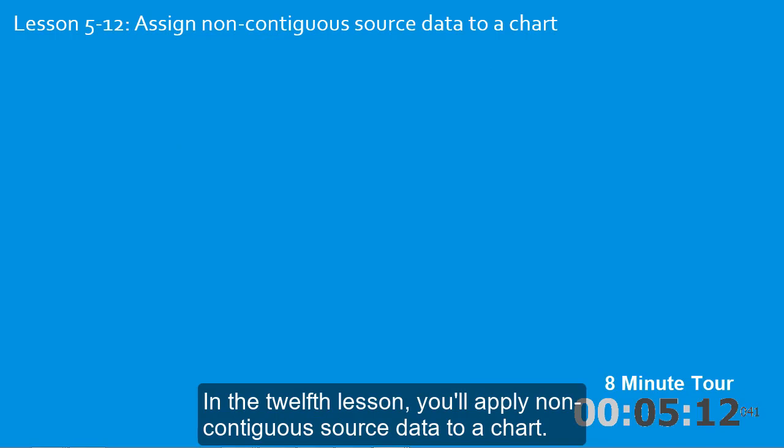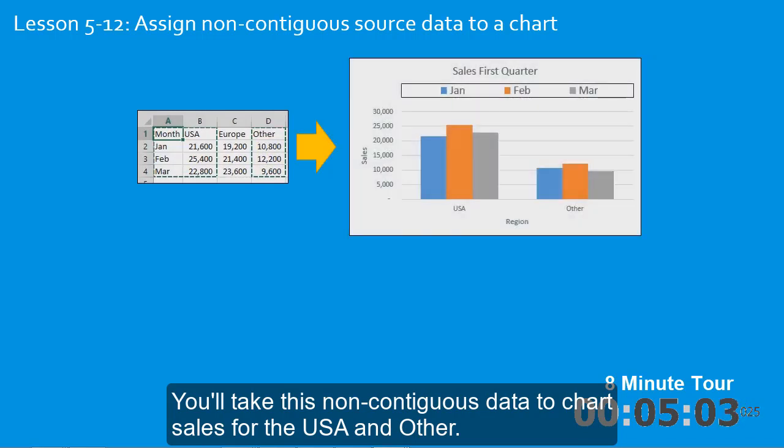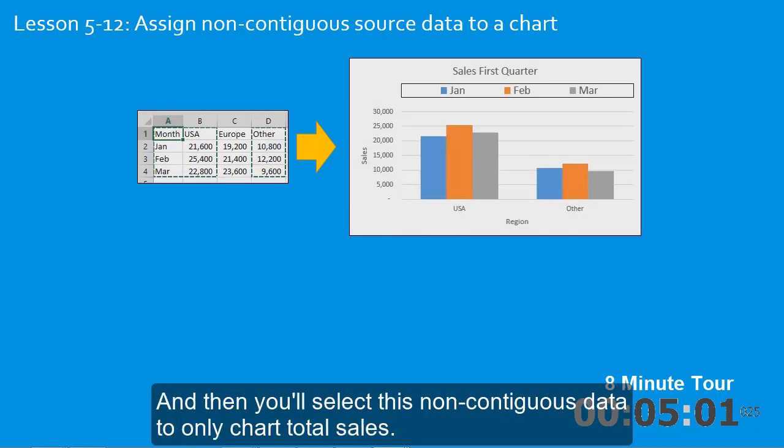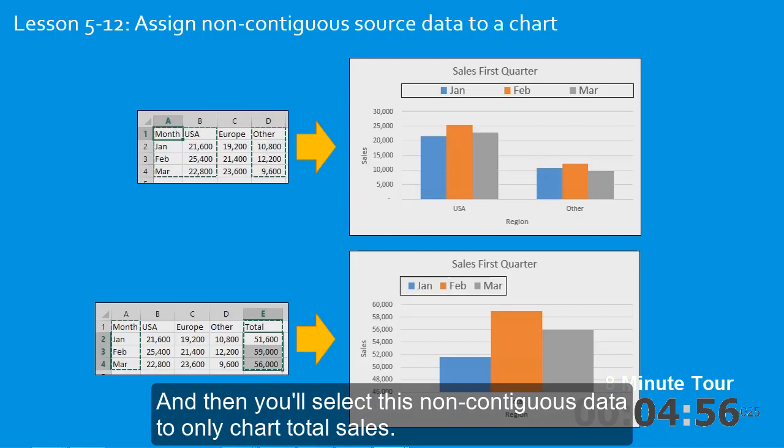In the twelfth lesson you'll apply non-contiguous source data to a chart. You'll take this non-contiguous data to chart sales for the USA and other, and then you'll select this non-contiguous data to only chart total sales.